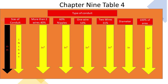Starting on the left-hand side of Table 4, we find our size of conduit — make sure you're in the inches column, not millimeters. Across the top we have several columns: more than two wires at 40%, then 60% for nipples, one wire at 53%, two wires, diameter of the pipe, and 100% total fill area. In pipe fill we use square inches, not cubic inches like in box fill.